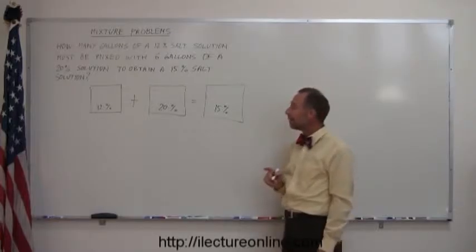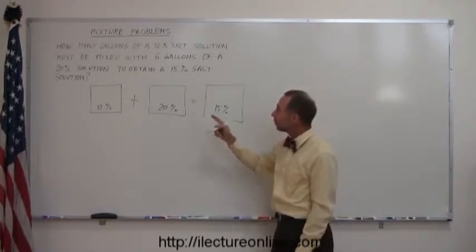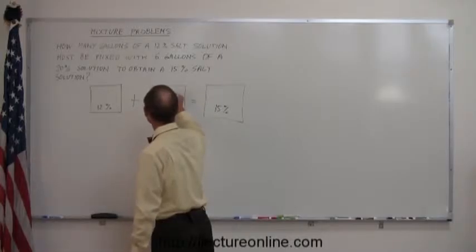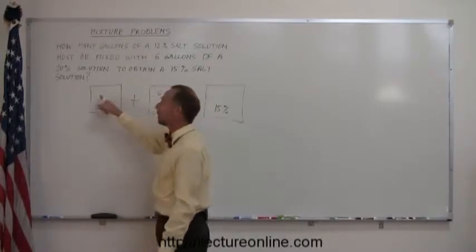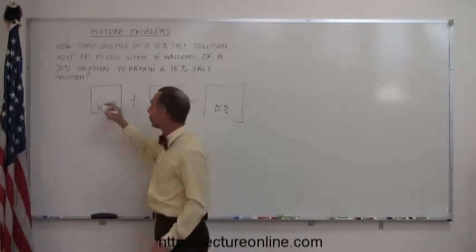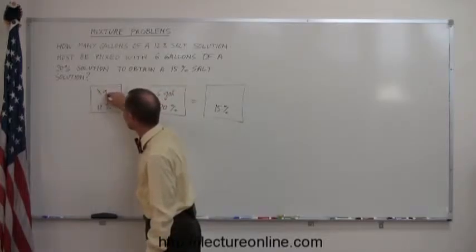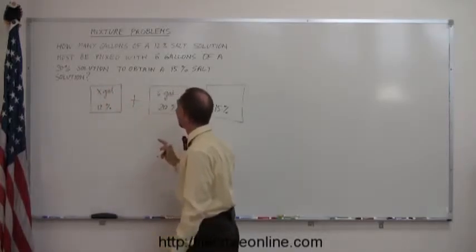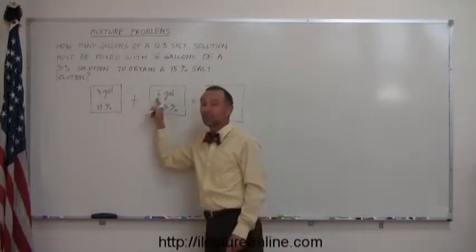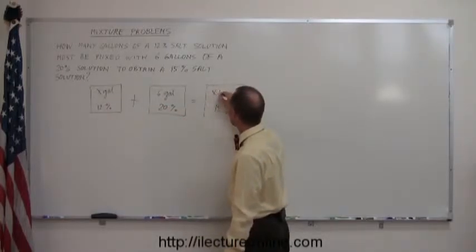Then you write down how many gallons you have of each. The only one you know is this one here: six gallons of this solution. You don't know how many gallons of this solution, so we'll write simply X gallons. If you add them together, you'll have X plus 6 gallons in the final solution.